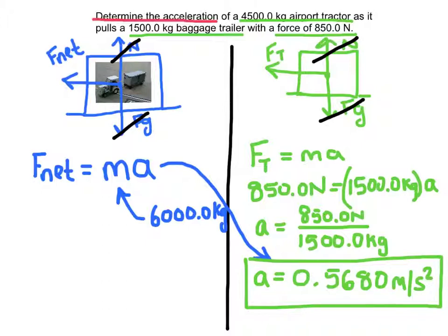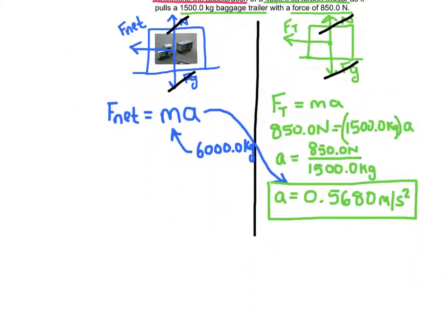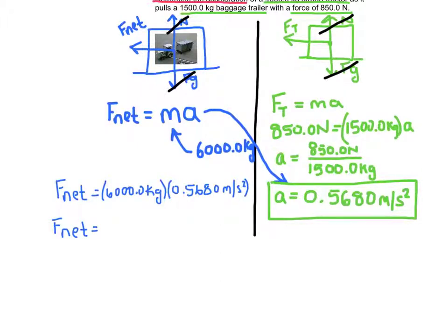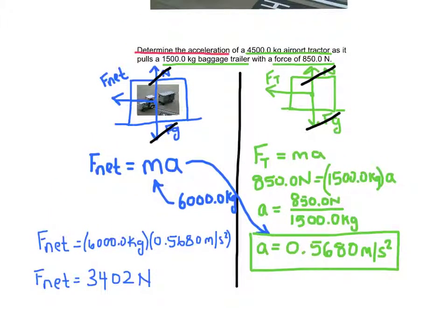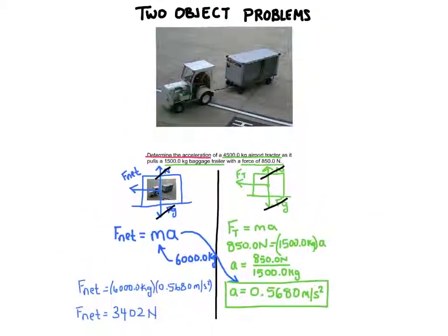The question does not ask for this, but let's plug that acceleration value into the whole-system equation to find the net force propelling the entire system forward — just to see how much larger it has to be. Multiplying the total mass of 6000 kg by 0.568 meters per second squared gives a net force of 3,402 newtons. You can see that the total force of the system is much greater than the 850 N the tractor applies to the trailer. And that is how you calculate force when dealing with objects that are connected together.